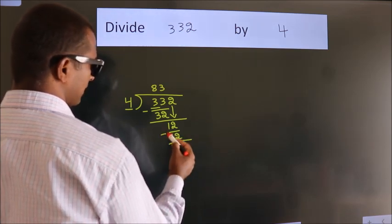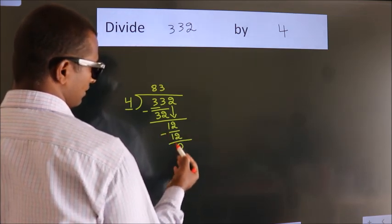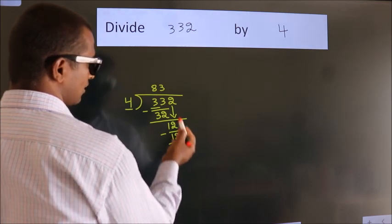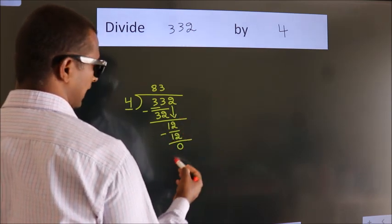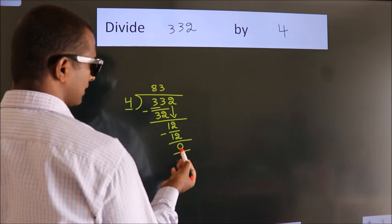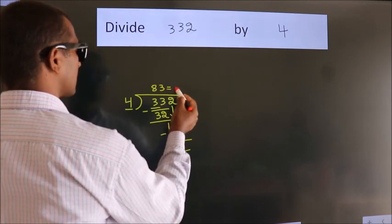Now we subtract. We get 0. After this, no more numbers to bring it down, and we got remainder 0. So this is our quotient.